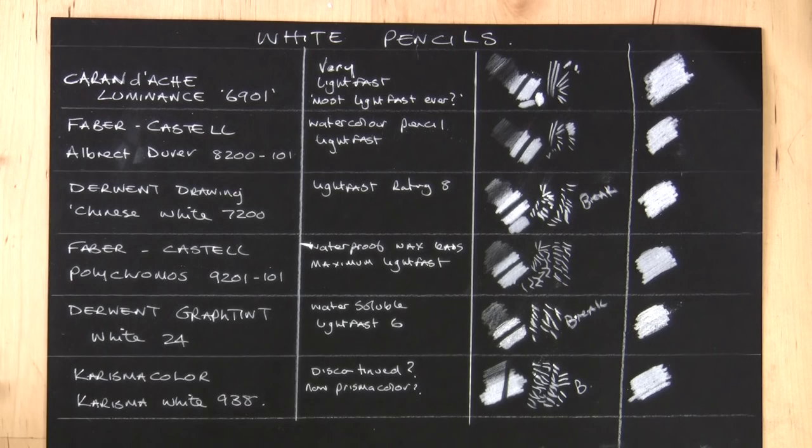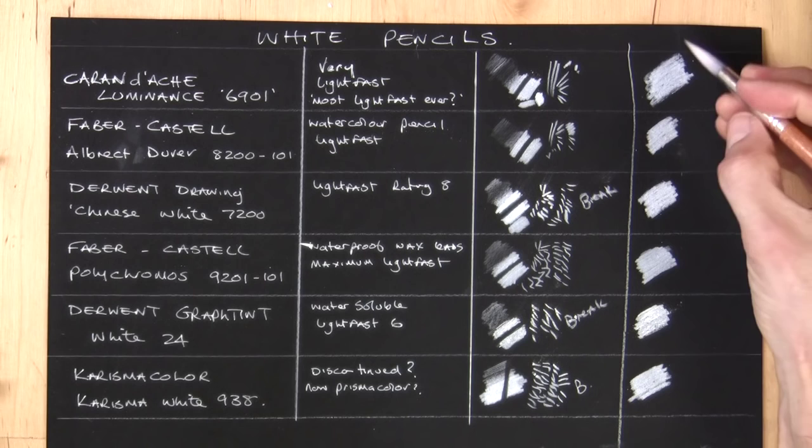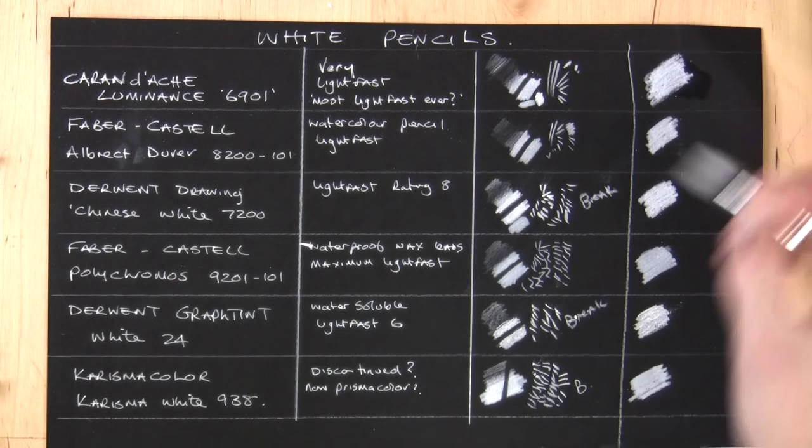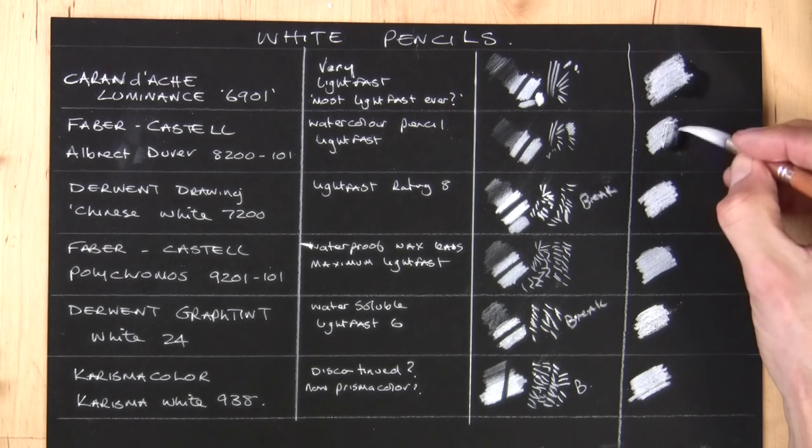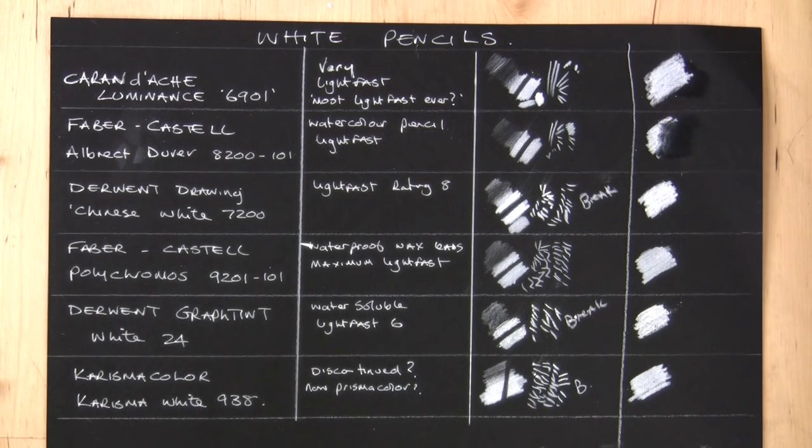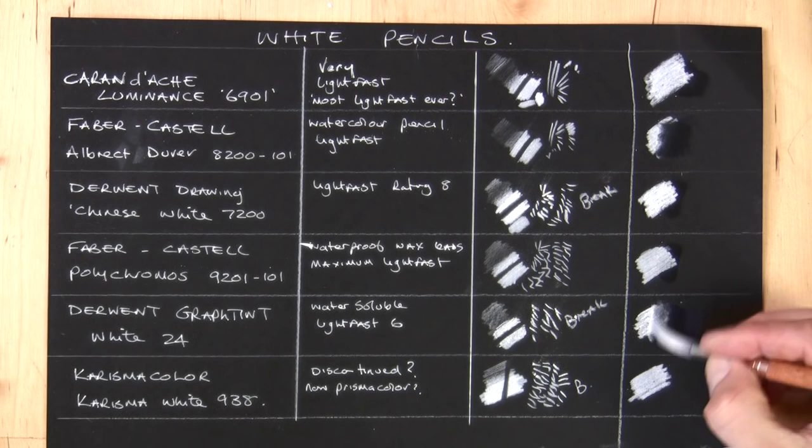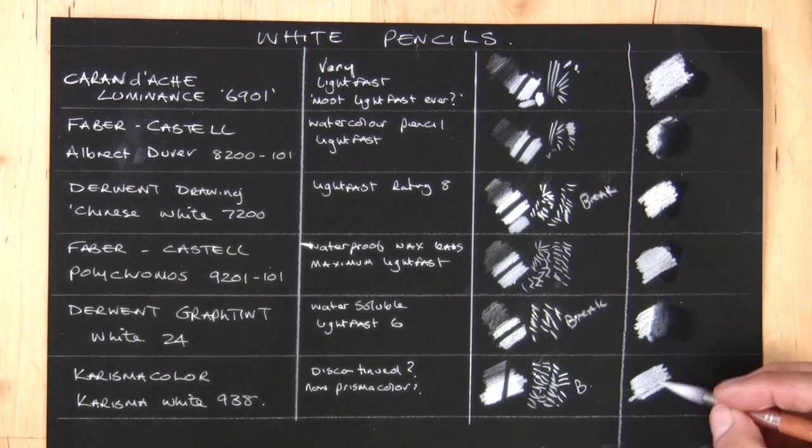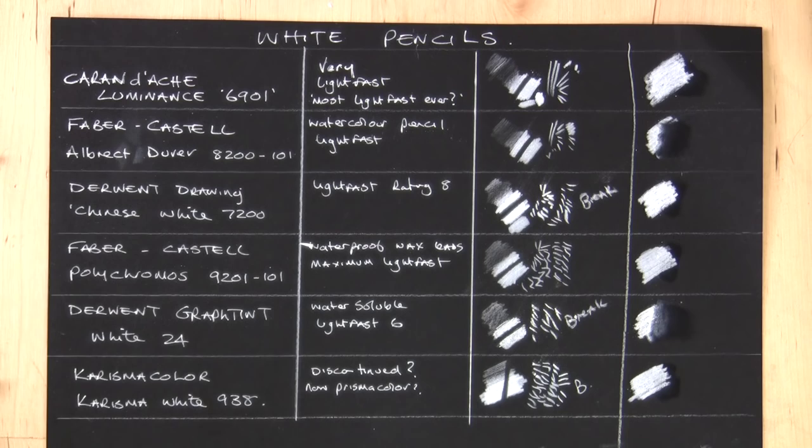Okay, so just dip that in some water. Some of these are not meant to be water soluble. If they're wax based or oil based, obviously they won't be water soluble at all. And some of them are meant to be like that. So you could get different effects. And the Chinese White is not. And the Luminance has wax lead. Graphitint is very water soluble. And the Prismacolor waterproof. So you can see those two are the water soluble ones.